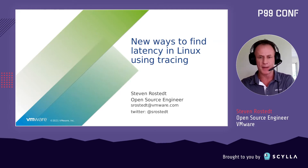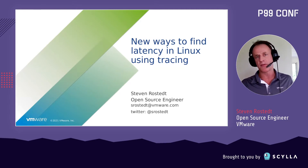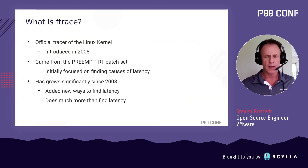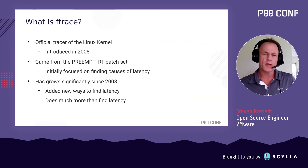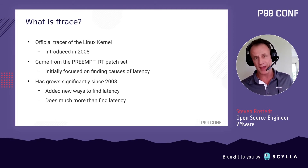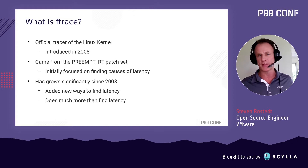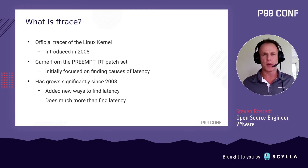Today I'm going to be talking about new ways to find latency in Linux using tracing, and we're going to be specifically focusing on Ftrace. Ftrace is the official tracer of the Linux kernel, introduced in 2008. It had two parents: a tracer I used for my master's thesis in 1998, and a tracer that was part of the preempt RT patch back in 2004.